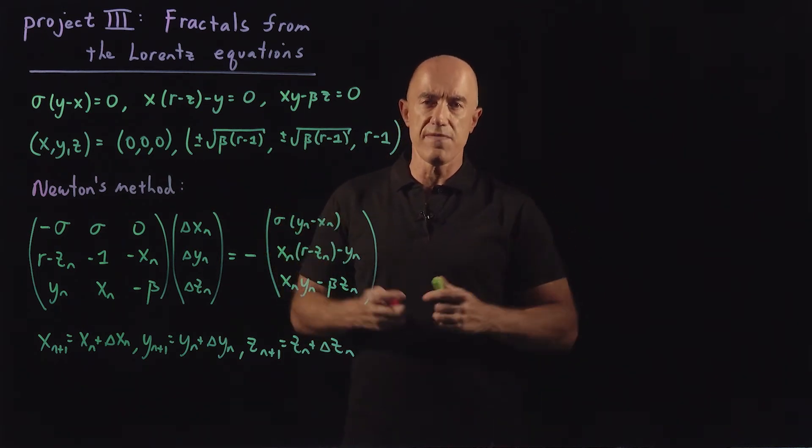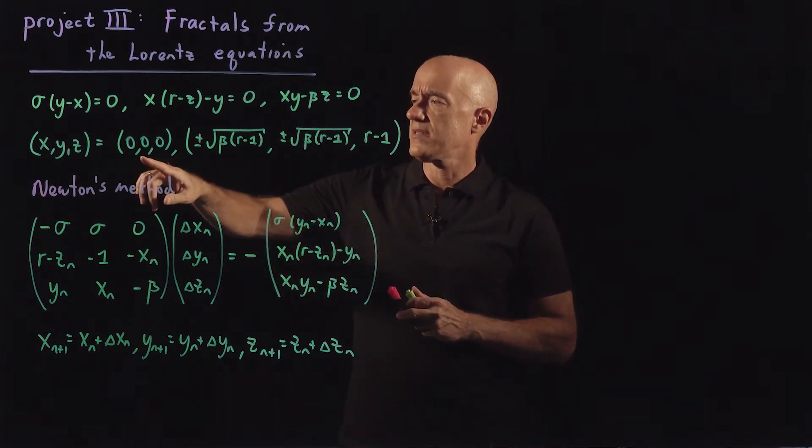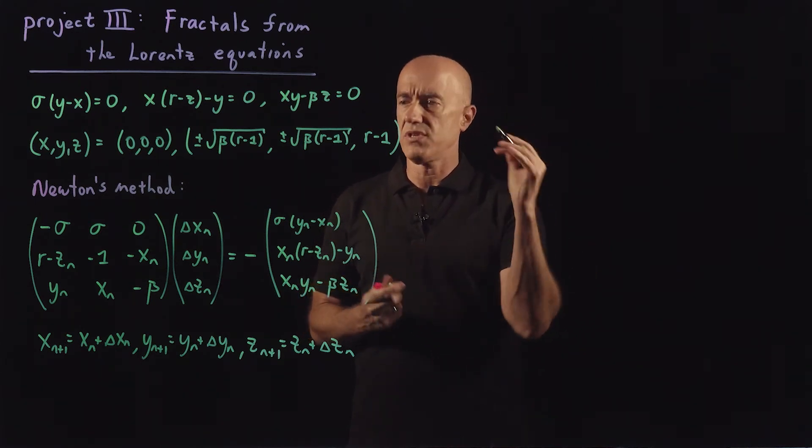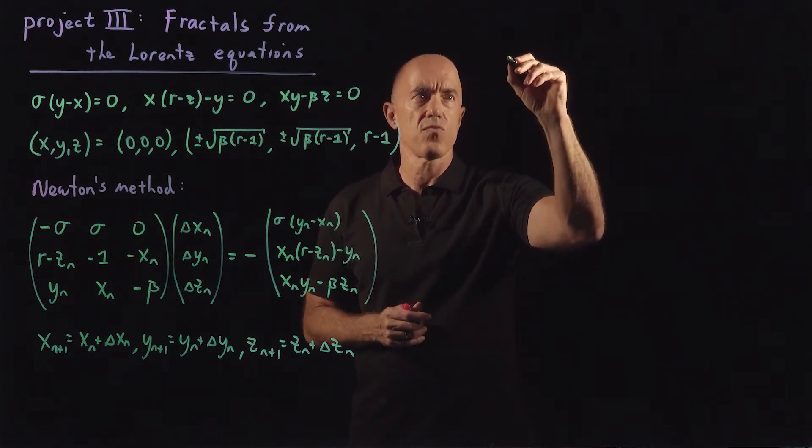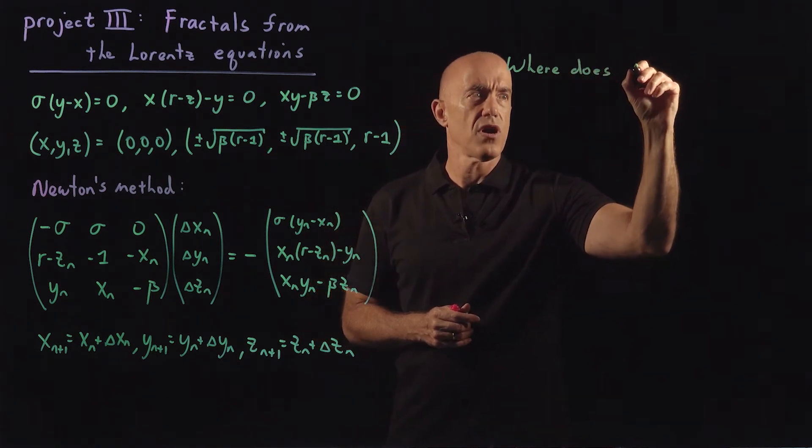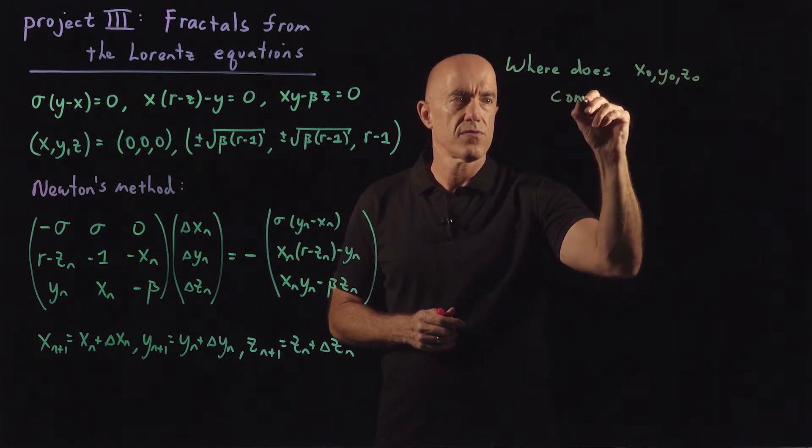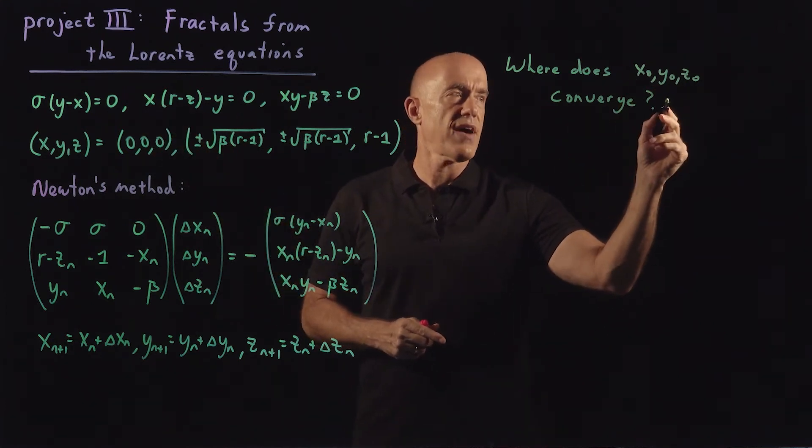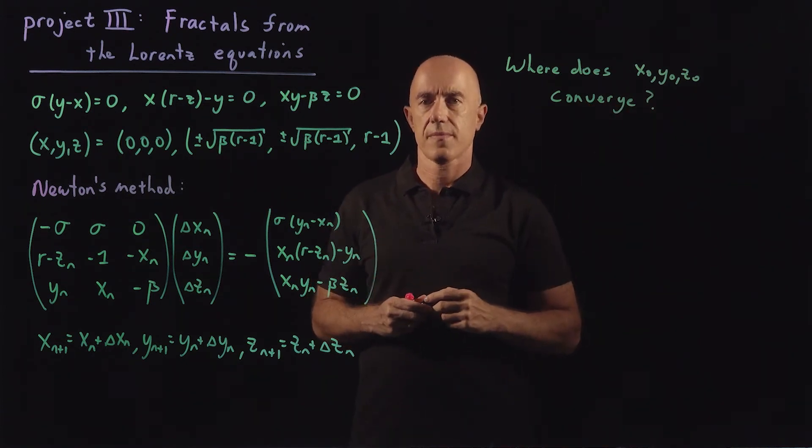So like before, we might get a fractal if we see what initial values for x naught, y naught. So we start with x naught, y naught, and z naught converge, right? Using Newton's method. So to which root does the starting value x naught, y naught, and z naught converge?